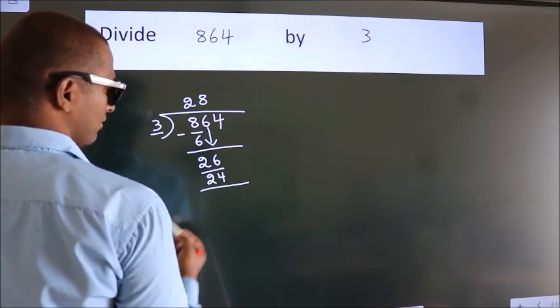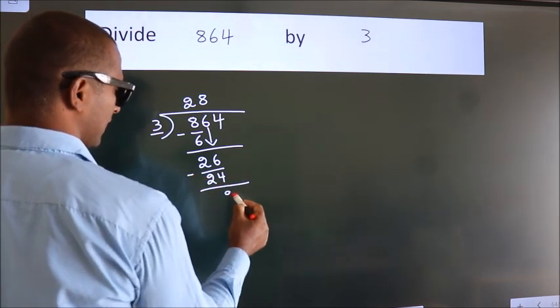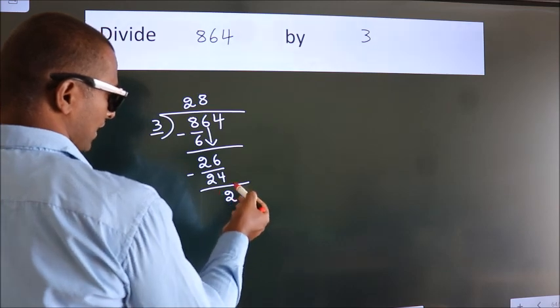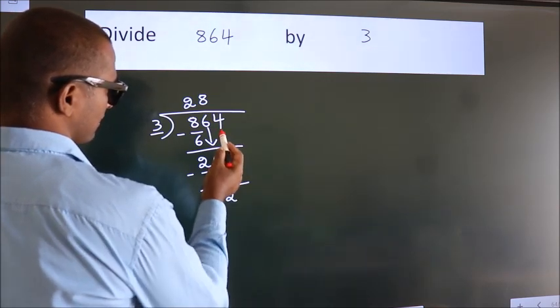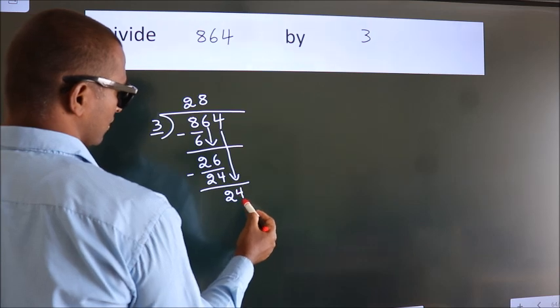Now, we subtract. We get 2. After this, bring down the beside number. So, 4 down. So, 24.